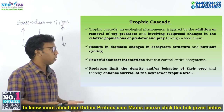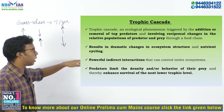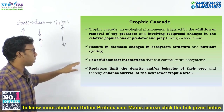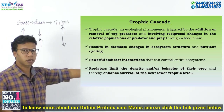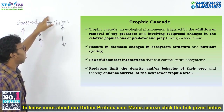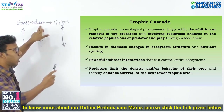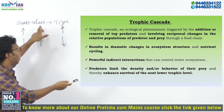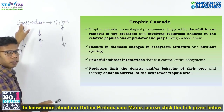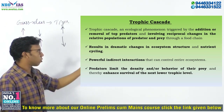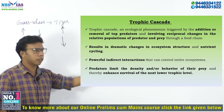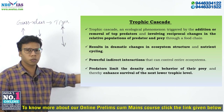Trophic Cascades occur when predators limit the density and/or the behavior of their prey, thereby enhancing the survival of the next lower Trophic level — that means Grass. The predators limit the density and behavior of their prey, and that process will enhance the survival of the next lower Trophic level. You have to remember that Trophic Cascades occur when predators limit the density of a species or when behavioral changes happen.